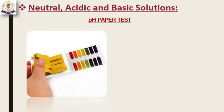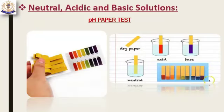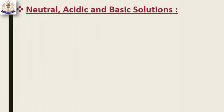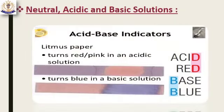By using pH paper we can easily check whether a solution is a strong acid or a weak acid, a strong base or a weak base, or if it is neutral. The easiest way to check the acidic or basic nature of a solution is litmus paper. Blue litmus paper turns red or pink in acidic medium, and red litmus paper turns blue in basic medium.